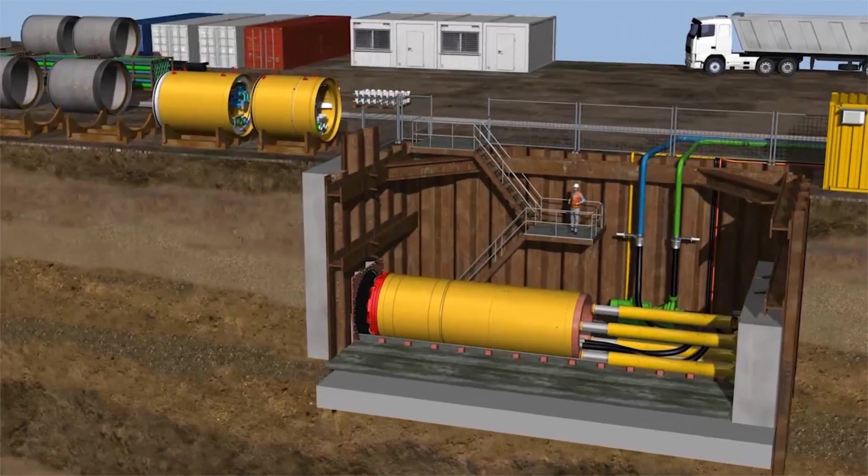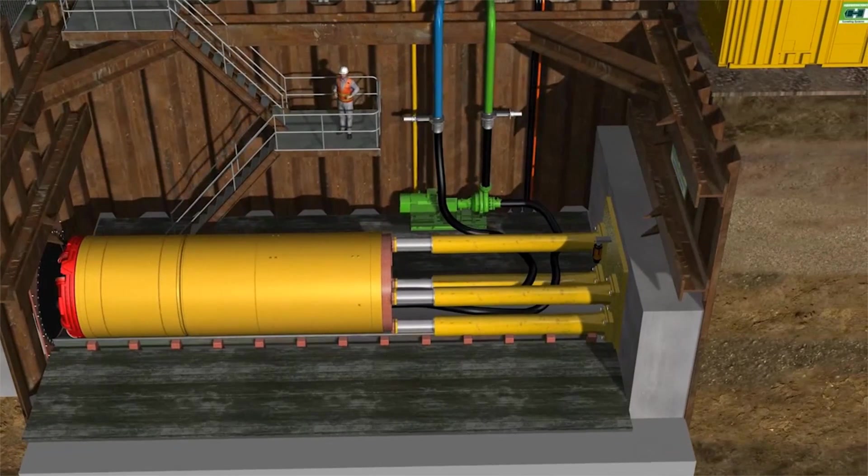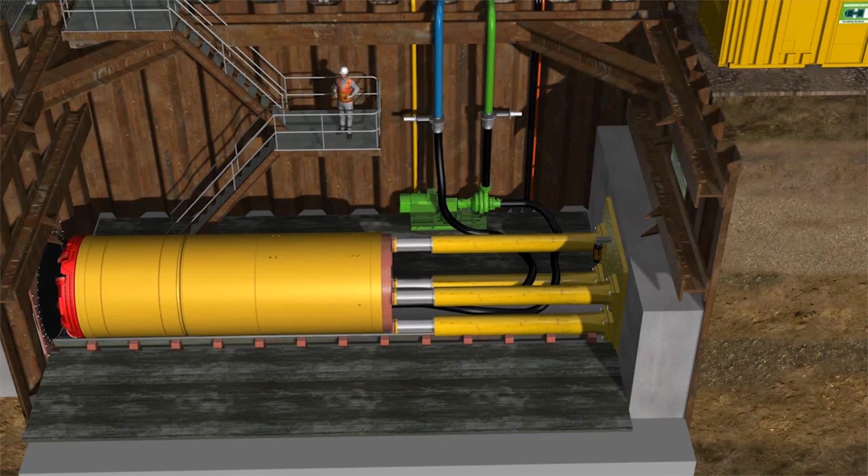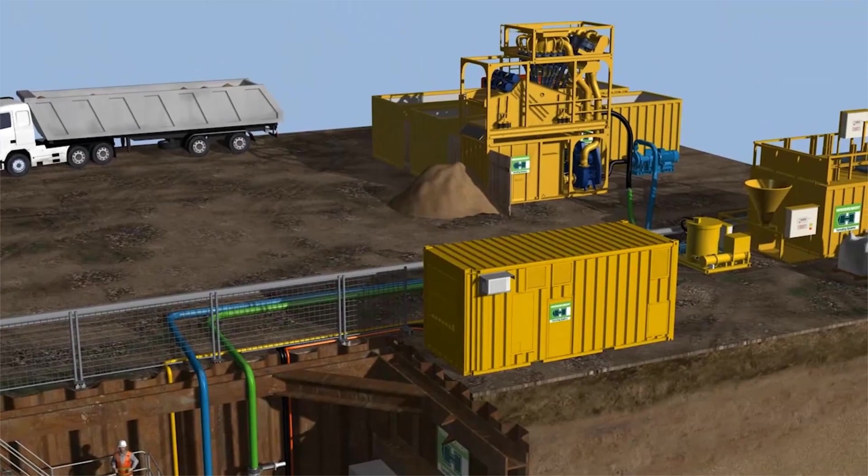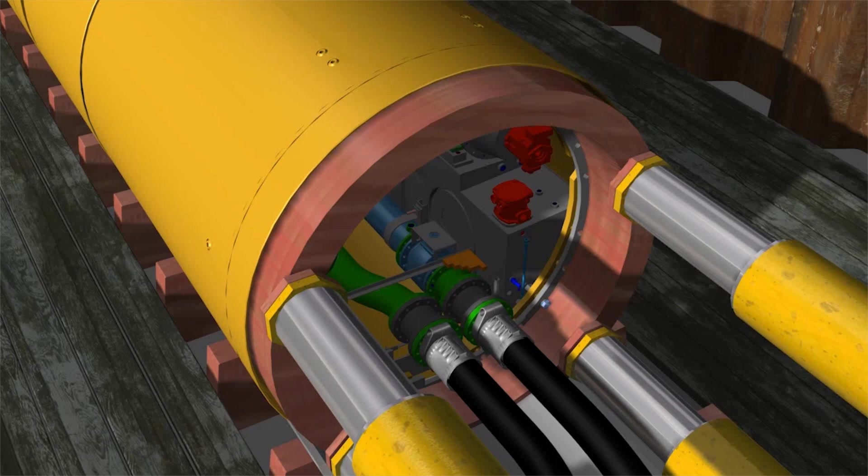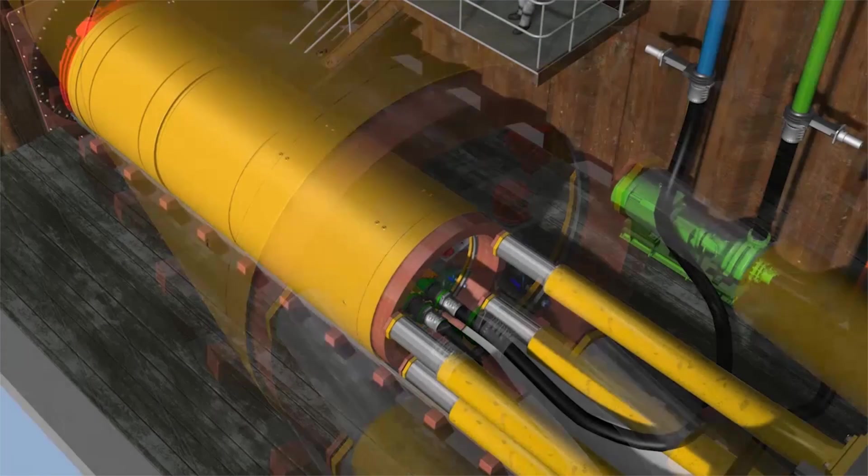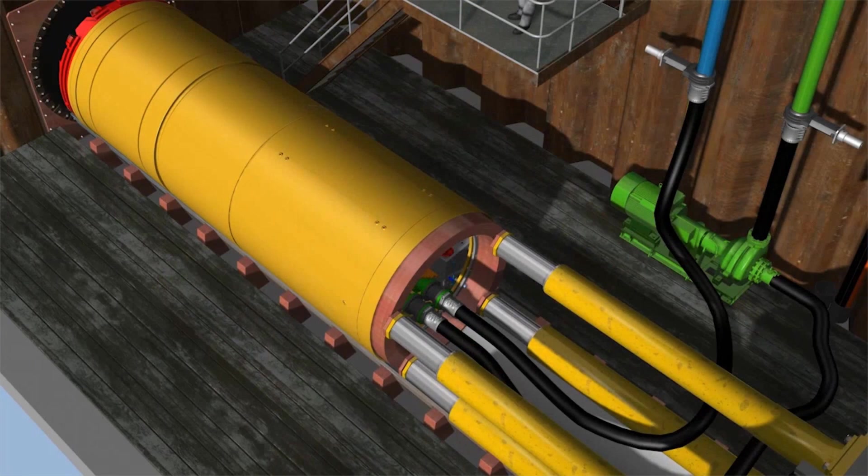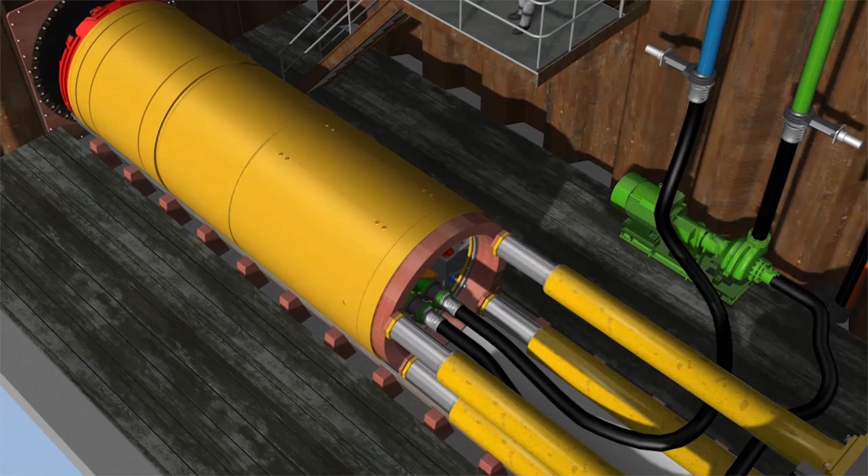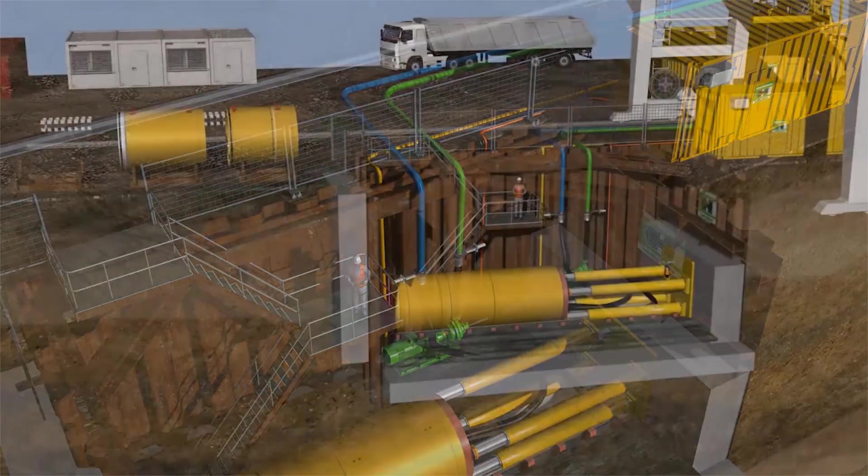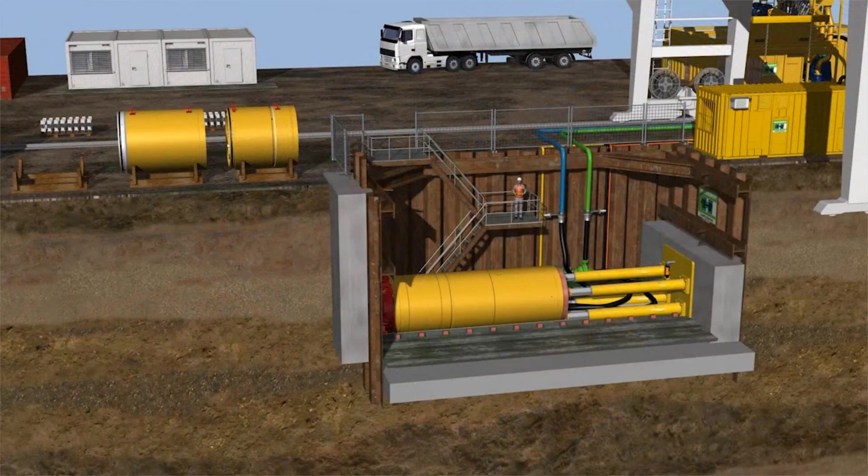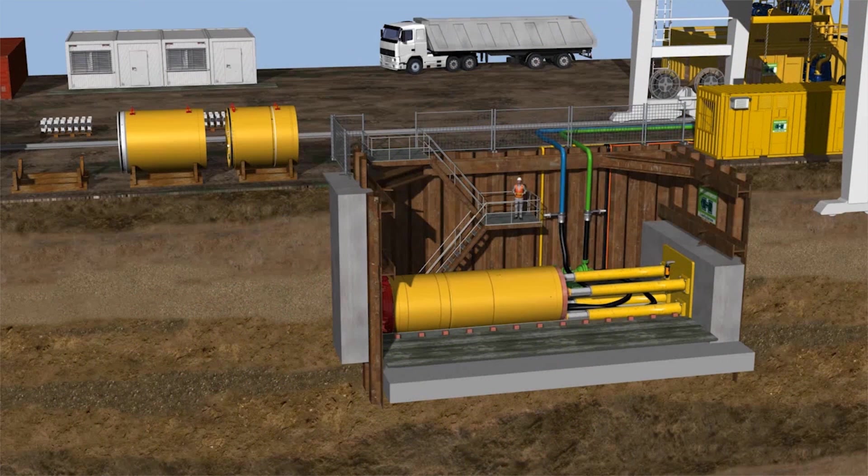To operate the AVN, a closed slurry circuit is necessary. A slurry pump is installed in the launch shaft, and the feed pump is installed at the separation plant. The system is connected to the tunnel boring machine with slurry lines and hoses. The system is filled with water or bentonite, a mixture of water and clay powder. Once the tunneling system has been fully connected to the hydraulic and electrical supply, it can tunnel through the lean mixed concrete block in front of the startup seal.